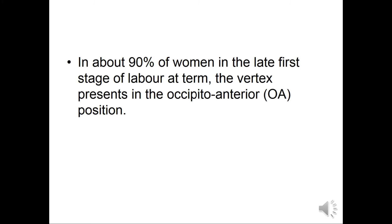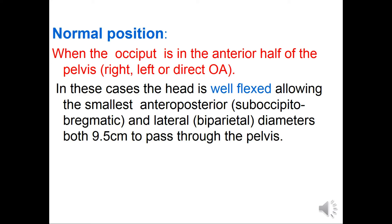In approximately 90 percent of women in the late first stage of labor, the vertex presents in the occipital anterior position. This is the normal position when the occiput is in the anterior half of the pelvis — right, left, or direct occipital anterior. In these cases, the head is well flexed, allowing the smallest diameters — the suboccipital-bregmatic and the biparietal, both 9.5 cm — to pass through the pelvis.